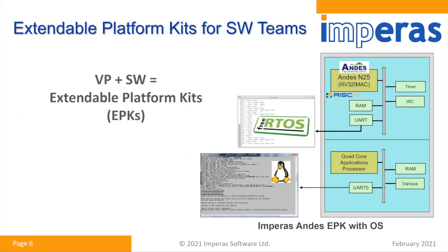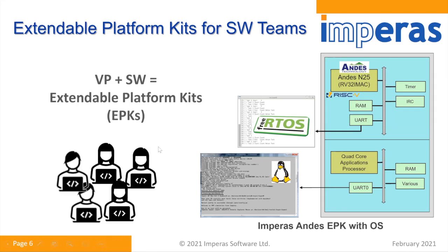Another concept is what we call EPK — Extendable Platform Kits. It's a fixed virtual platform plus running software. Here's an example of an AndesTech EPK: it shows an AndesTech single-core N25 running FreeRTOS, with a quad-core AP that boots SMP Linux. Linux prompts usually come up in less than 10 seconds on Empiric. An EPK is a great way to share with your software team so they can start their part of the project early.